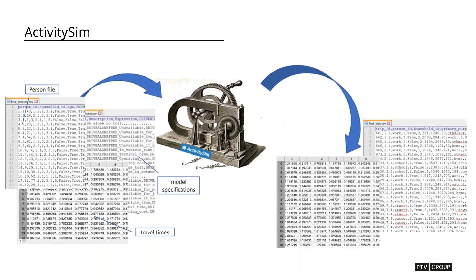ActivitySim is primarily an ABM engine. You supply it with inputs — mostly text files including configuration files and CSV files for data and matrices — and it provides output files in text format. There's not much in the way of a graphical user interface, which is similar to many other ABMs. This makes it challenging to integrate with your travel demand modeling software. Also, these input and output files tend to be really large, making it a big chore to store, manage, view, and explore the data.